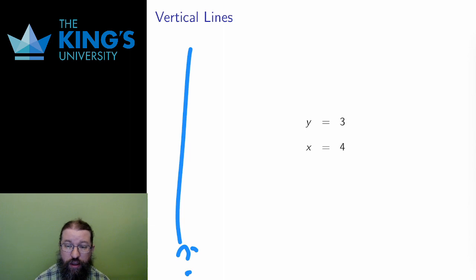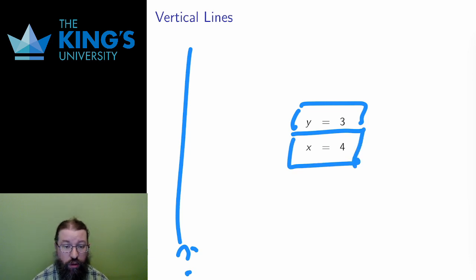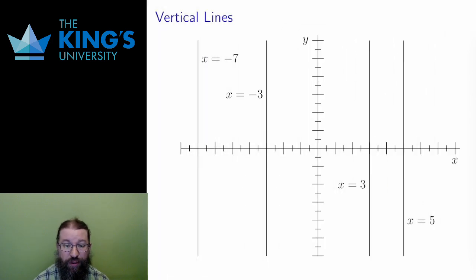However, by comparison, if horizontal lines are all y equals something, say 3, then vertical lines should be x equals something, say 4. That indeed does work, and here are some examples of vertical lines at x values negative 7, negative 3, 3, and 5.